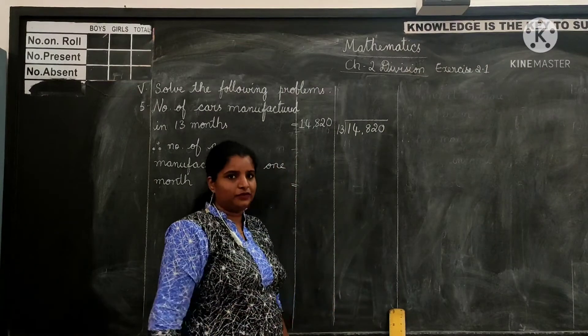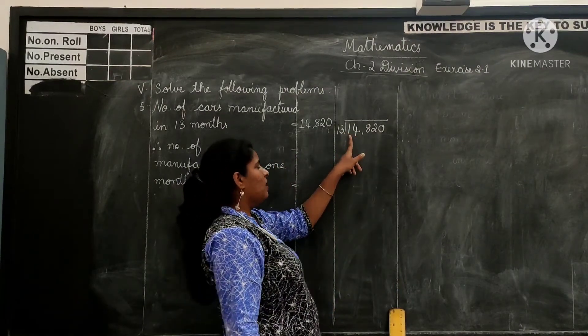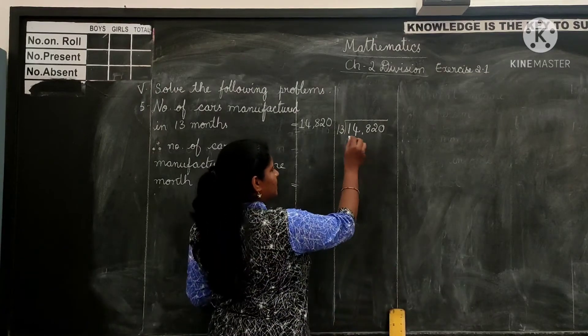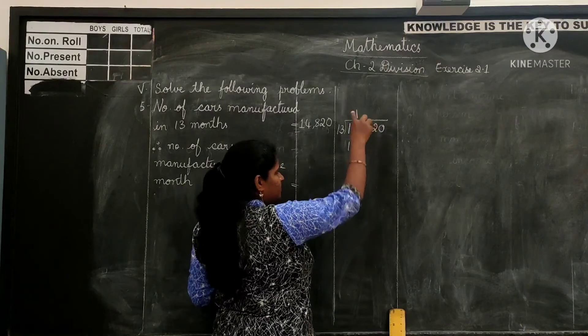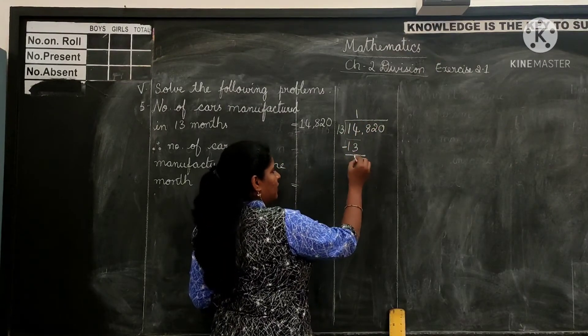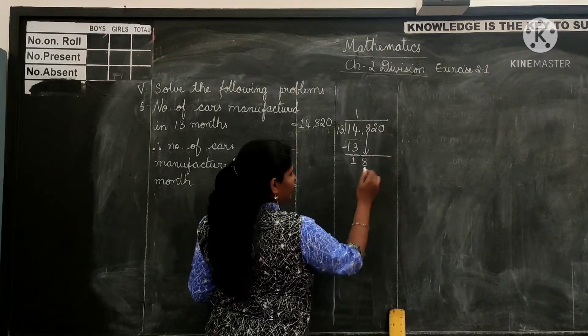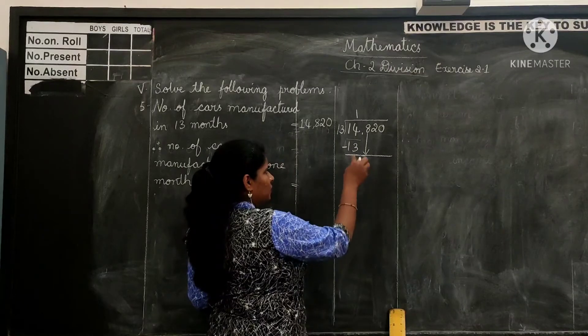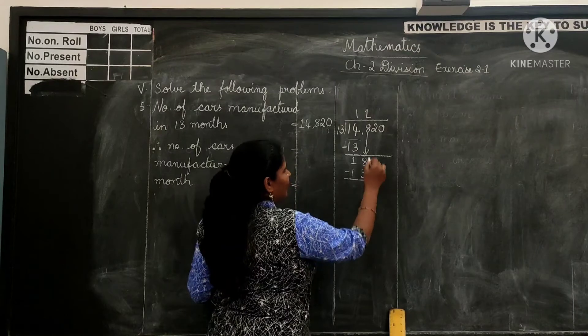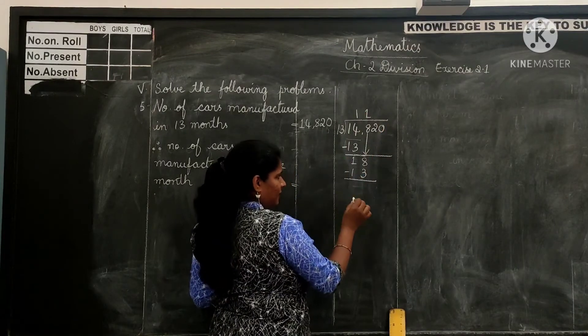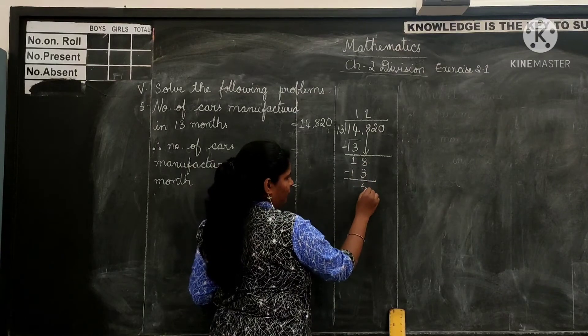Start division from high place of the dividend, ten thousands. We have 1 in ten thousands place, which is less than 13. So take two digits, make it 14. 13 ones are 13. 1 in quotient's place, 13 under dividend. Subtract that from 14, which gives you 1. Get the next number down, 8, makes it 18. 13 one times gives you 13. 1 in quotient's place, 13 under dividend. 18 minus 13 gives you 5.